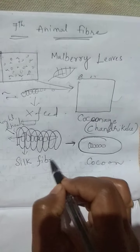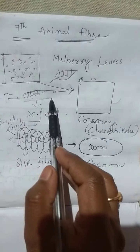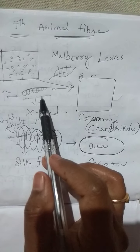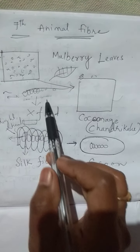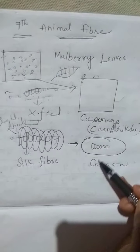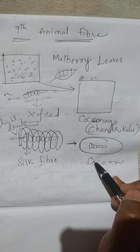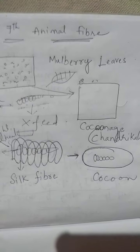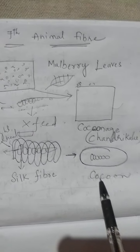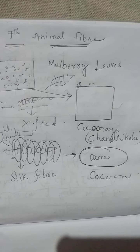We have completed two stages. One is the caterpillar stage, where it grows into a big caterpillar. Then it becomes a cocoon. In the next class, we will see how adults come from the cocoon.